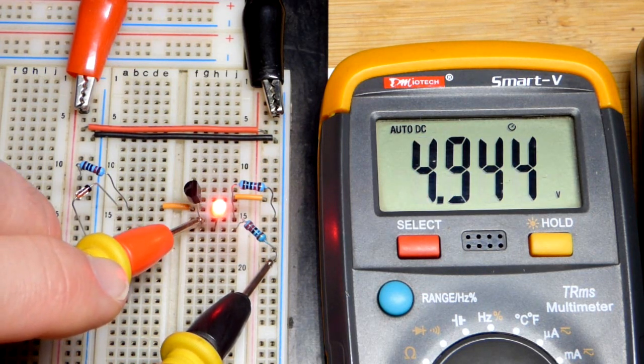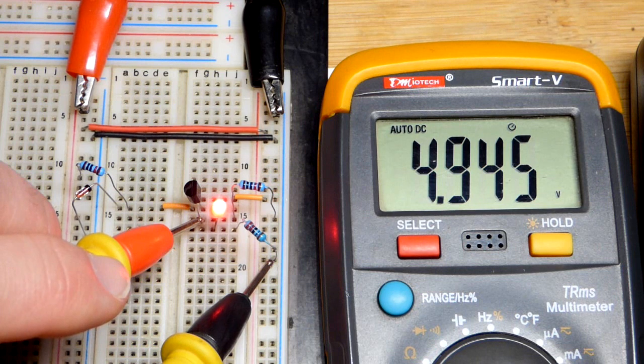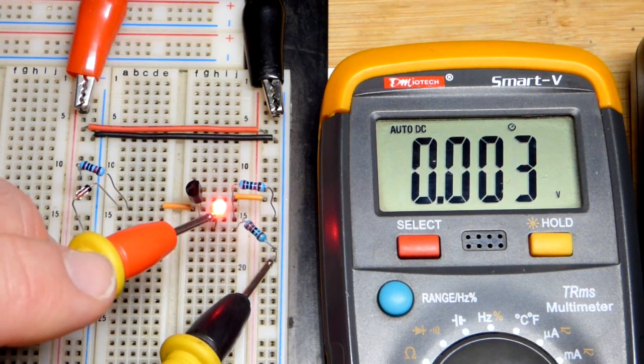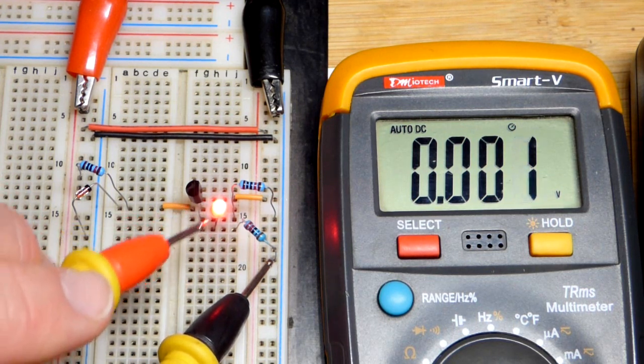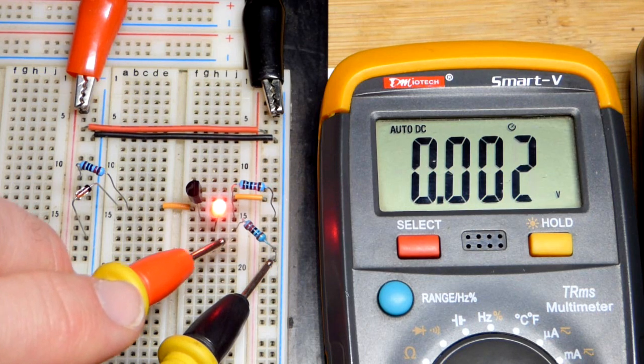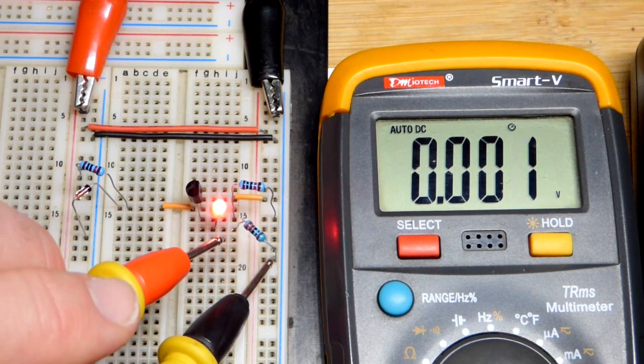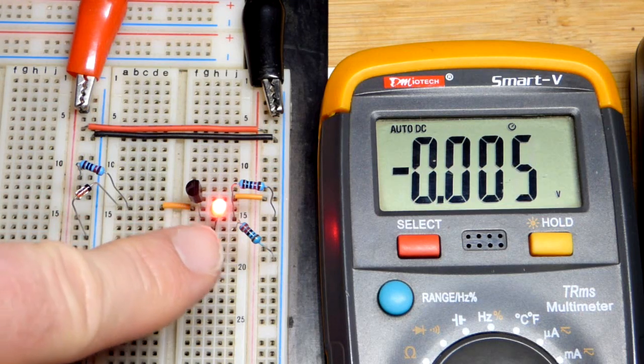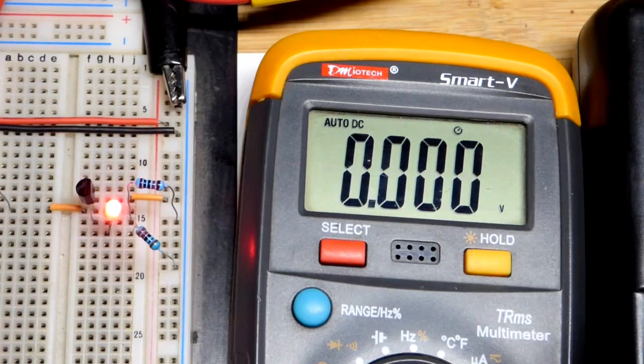But ultimately, if you have a resistive load, at some point, the resistive load will level it off. So, that goes with the diode, too. It, or LED, will probably conduct better as it gets warmer. But ultimately, that puts more voltage across the resistor. And thus, it provides more current limiting protection. So, at some point, it will level off.